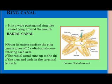The ring canal is a wide, pentagonal ring-like vessel lying around the mouth. Radial canals arise from the outer surface of the ring canal — it gives off five radial canals, one entering each arm. The radial canals run up to the tip of the arm and end in the terminal tentacle of the echinoderm.